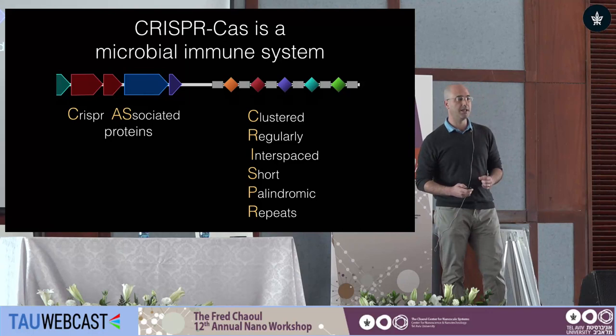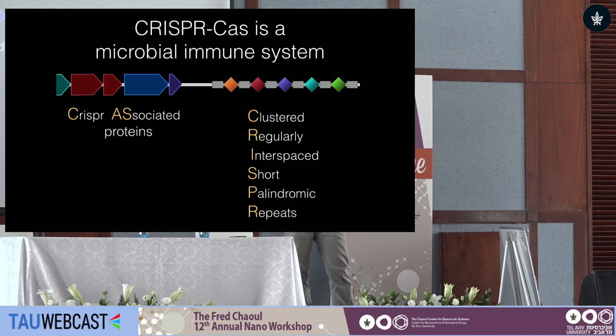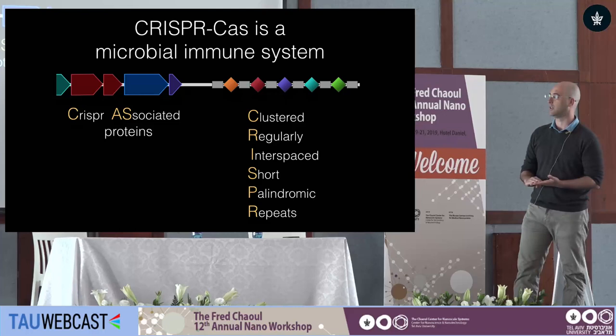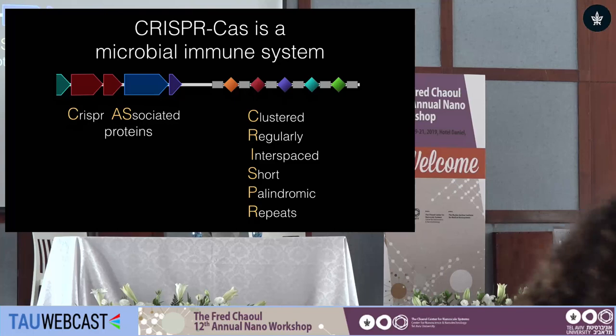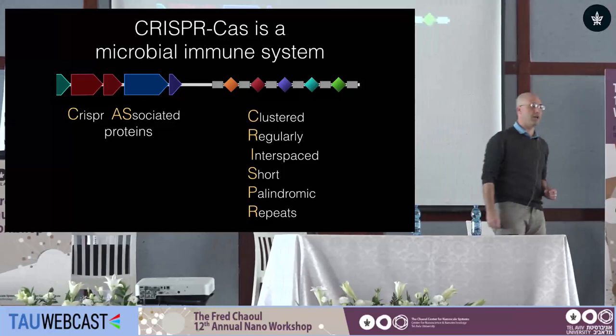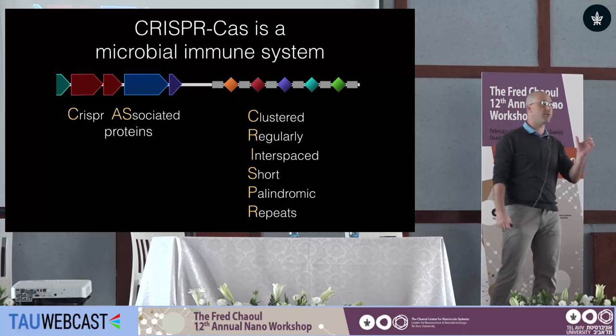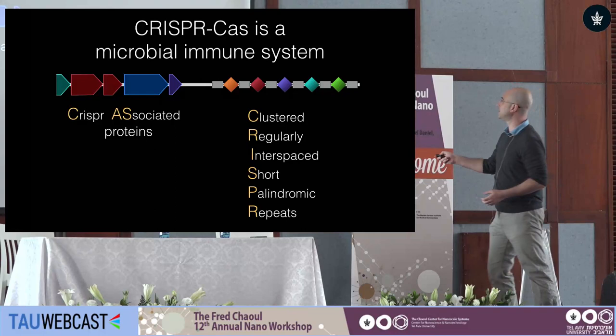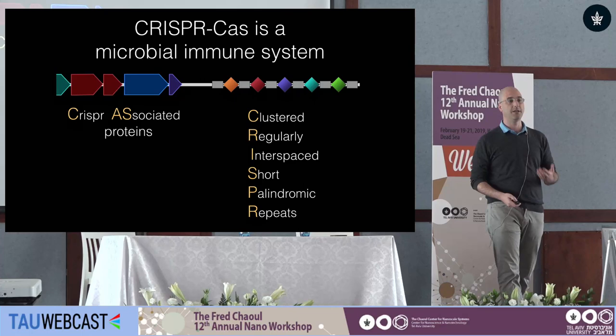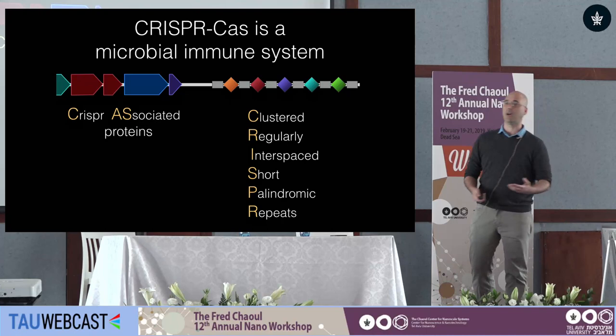I'll speak about one of the systems I've been working on in recent years: CRISPR-Cas. I'm sure you've all heard about CRISPR-Cas, but just to be on the same page, a short introduction. In CRISPR-Cas we have two major components. One is the CRISPR array, which has repeats — depicted by grey rectangles — and between them are spacers, each different, serving as the memory of the system. These spacers allow CRISPR-Cas to function as an immune system in microbes. The Cas proteins carry out the immunity function together with this immunization record.